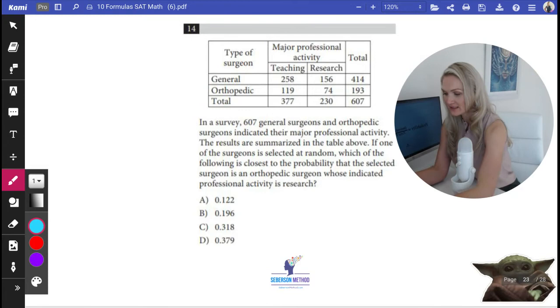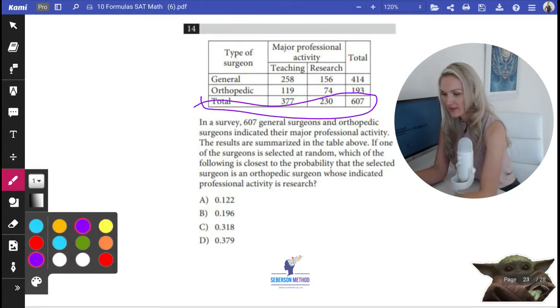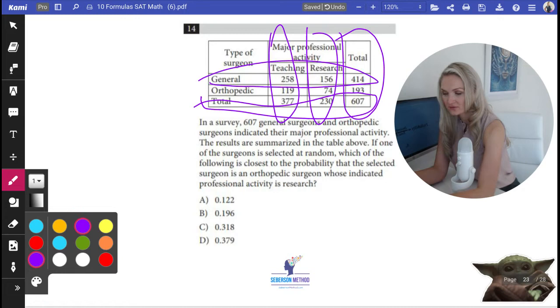You're always going to have your totals at the bottom here and here. Sometimes you're not going to have them so you will need to create those totals, but these are the totals of your columns and these are the totals of your rows.